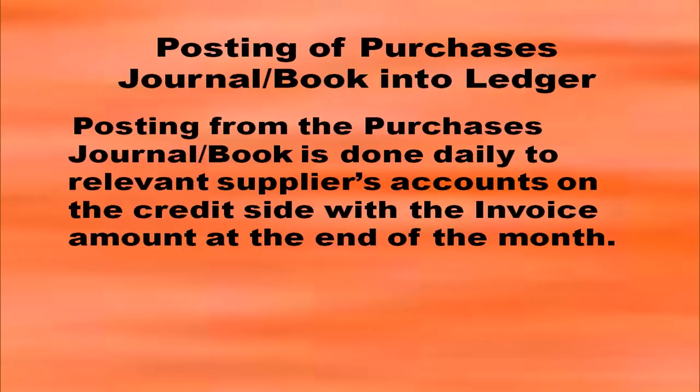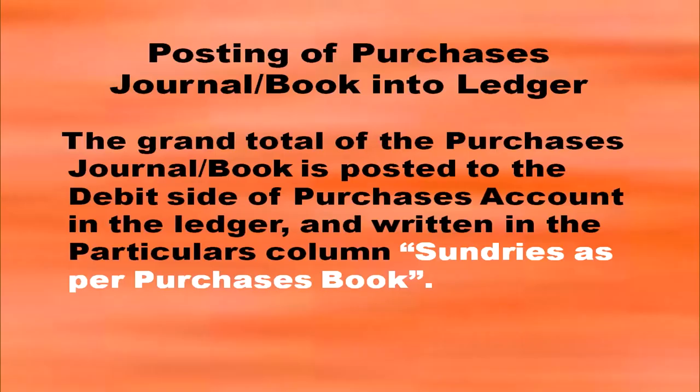Coming to the posting of purchases journal into ledger. Posting from the purchases book is done daily to individual suppliers' accounts on the credit side with the invoice amount at the end of the month. The grand total of the purchases book is posted to the debit side of purchases account in the ledger, and written in the particulars column as 'sundries as per purchases book'.